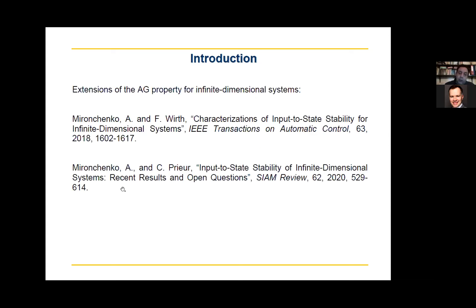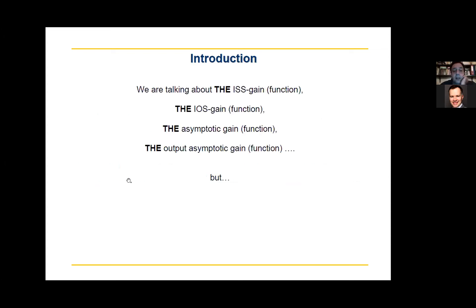These properties were defined for finite-dimensional systems. In two cited papers, extensions of the asymptotic gain property for infinite-dimensional systems and new variations can be found. But I must note: talking about 'the ISS gain' or 'the asymptotic gain' is not entirely correct — it is actually not correct.